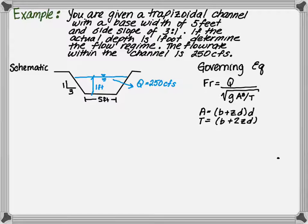For a trapezoidal channel, the area is equal to the depth of flow times the quantity of the base width plus the side slopes times the flow depth. The top width is equal to the base width plus 2 times the side slopes times the depth of flow.